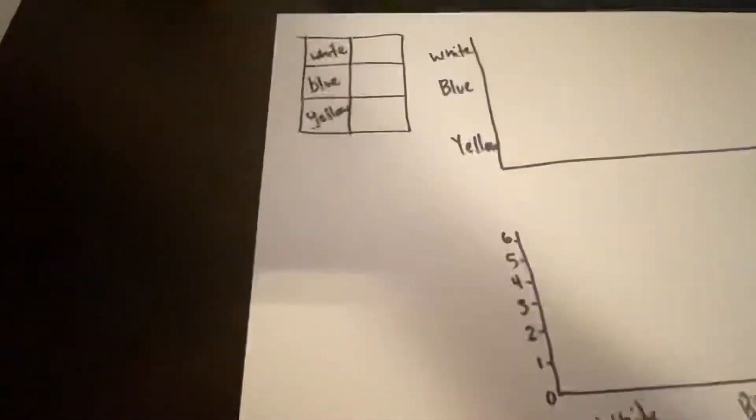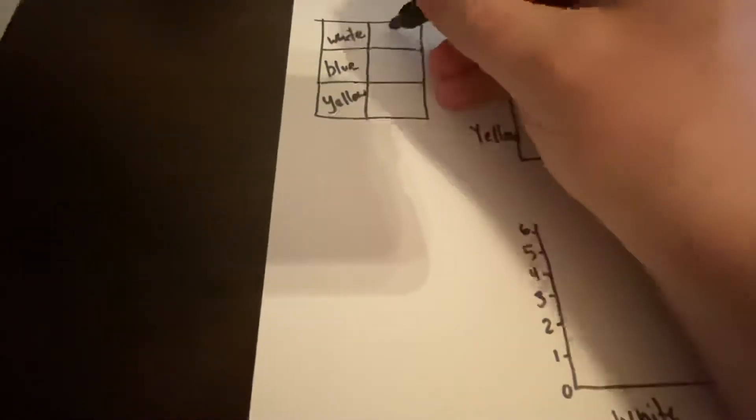So then I look through my data. I've got one, two, three, four, five, six white over here in my table. Go ahead and put down that there are six white Legos. Come back over.